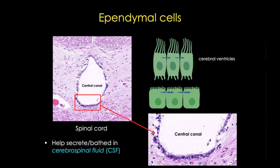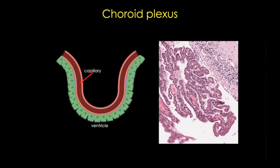The larger structure that produces and regulates the composition of CSF is the choroid plexus, shown here with a cartoon schematic and also in an H&E stain. The choroid plexus is formed by extensions of the pia mater covered in ependymal cells. These extensions push into the ventricles and are closely associated with capillaries, and fluid moves from the capillaries into the ventricles aided by the microvilli and cilia of the ependymal cells.